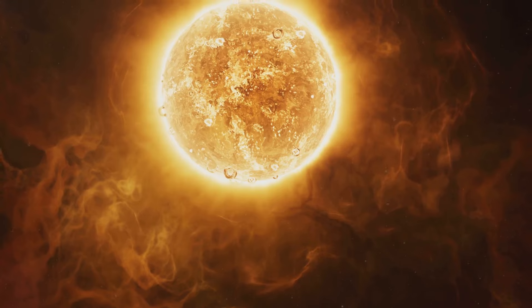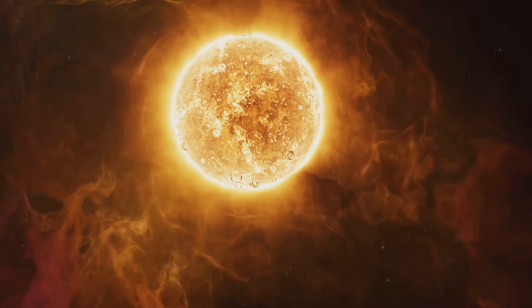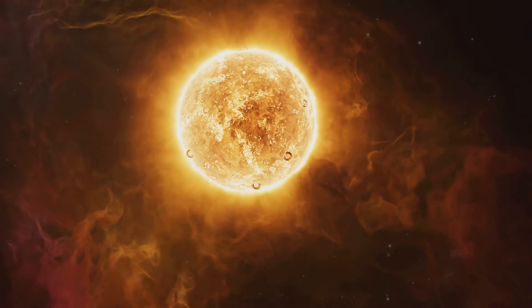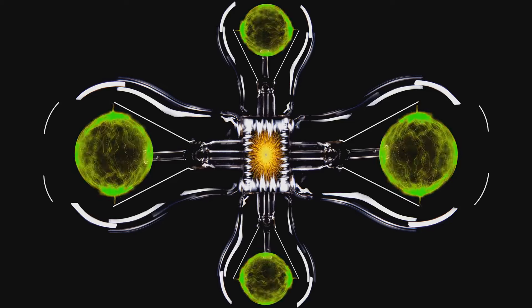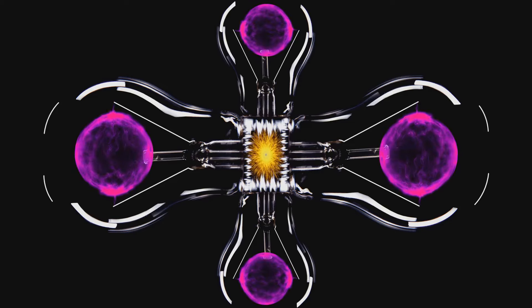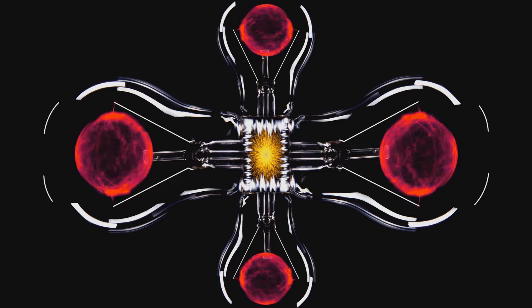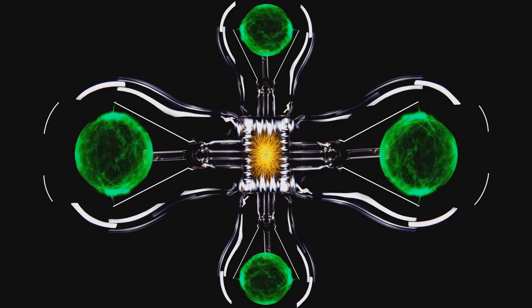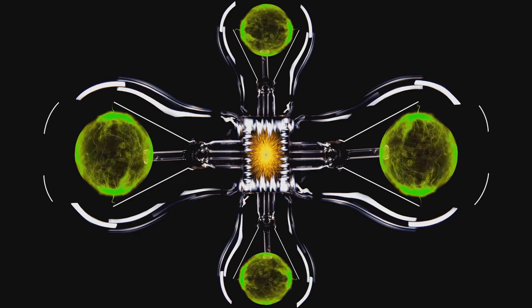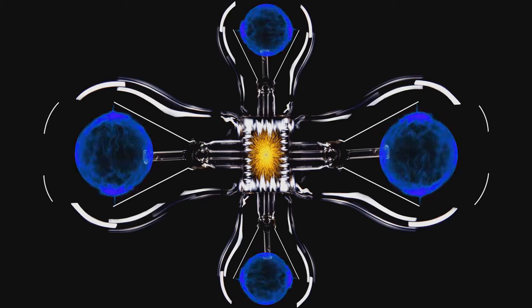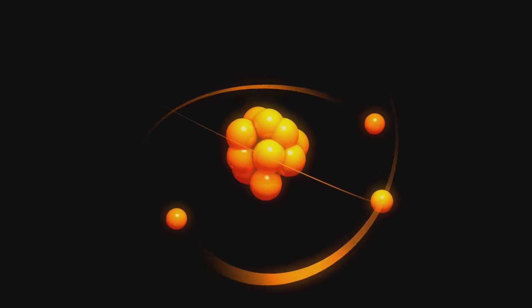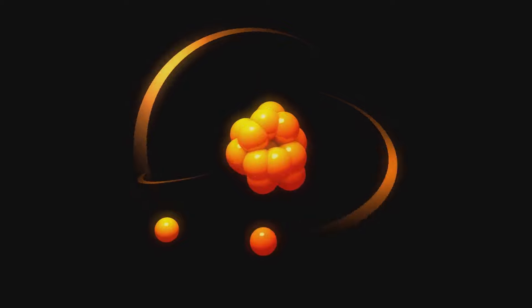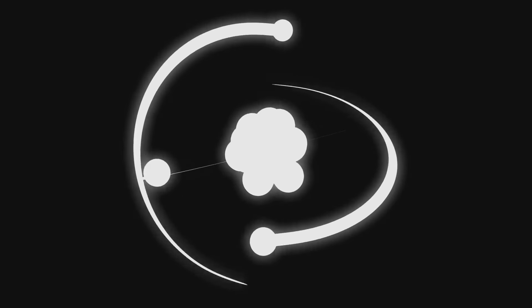The Sun is essentially a colossal nuclear fusion reactor, and without quantum tunneling, it simply wouldn't exist as we know it. Inside the Sun, hydrogen atoms collide and merge to form helium, releasing a tremendous amount of energy in the process. But according to classical physics, the hydrogen atoms don't have enough energy to overcome the electrostatic barrier that keeps them apart. Enter quantum tunneling. The hydrogen atoms don't go over the barrier, they go through it, thanks to their quantum properties. This tunneling process is what fuels the Sun and, by extension, all life on Earth.